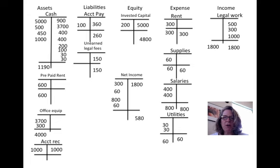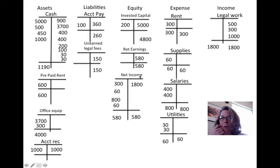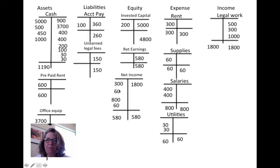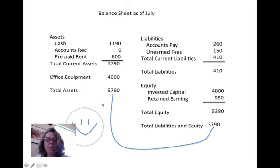We then close out the net income account into a permanent equity account — retained earnings — put it in there and total it up. Next, we create a balance sheet: all the balances from these T-accounts are placed into the balance sheet. The total assets equal the total liabilities and equity, which confirms the accounting was done correctly.